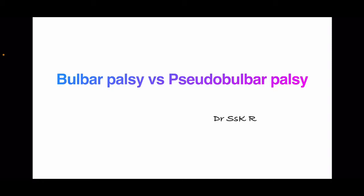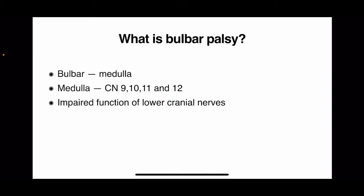So what exactly does the term bulbar palsy mean? The word bulbar, when in reference to the brain, deals with the medulla. Medulla houses the nuclei of cranial nerves 9 to 12, and these cranial nerves exit out of the medulla. In bulbar palsy, the pathology is either in the medulla, the neuromuscular junction, or these cranial nerves, resulting in impaired function of the lower cranial nerves, causing nasal regurgitation, dysphagia, or tongue weakness.